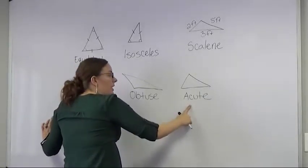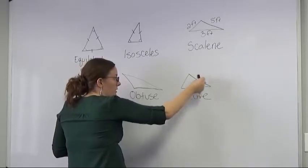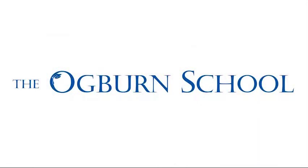And an acute triangle has all the angles that are less than 90 degrees, which means they're all going to be smaller.